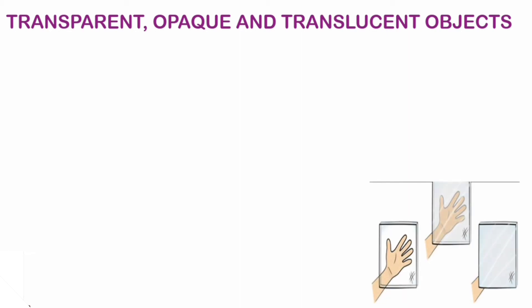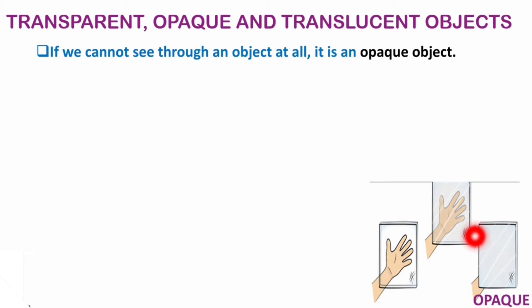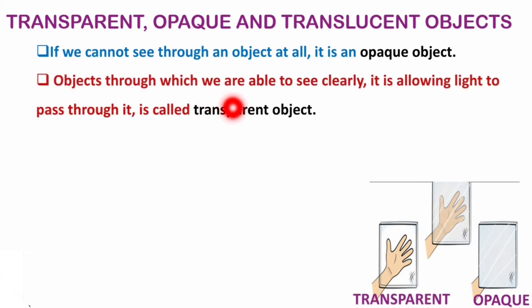Next are transparent, opaque, and translucent objects. You know the definitions from your previous chapter, but let's review. Looking at this picture, here the object behind is completely visible — that is transparent. Here it is partially visible — that is translucent. If you keep an object behind something and it is not visible at all, we call it opaque. Objects through which we can see clearly, allowing light to pass through, are called transparent objects.